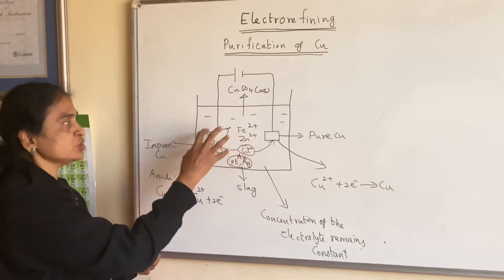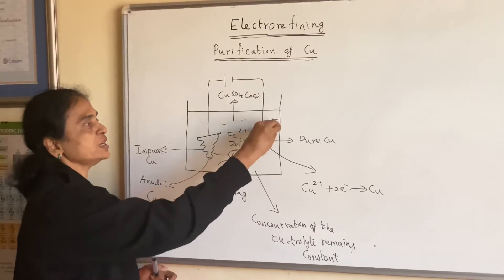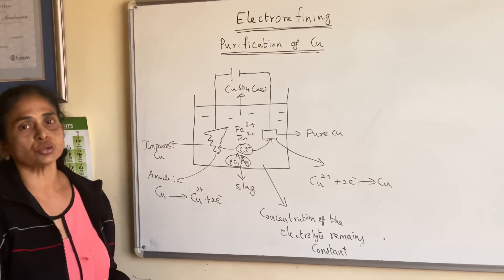So the rate at which the copper two plus comes to the electrolyte is the same as the rate at which it goes to the cathode. So the concentration of the electrolyte here also remains constant.